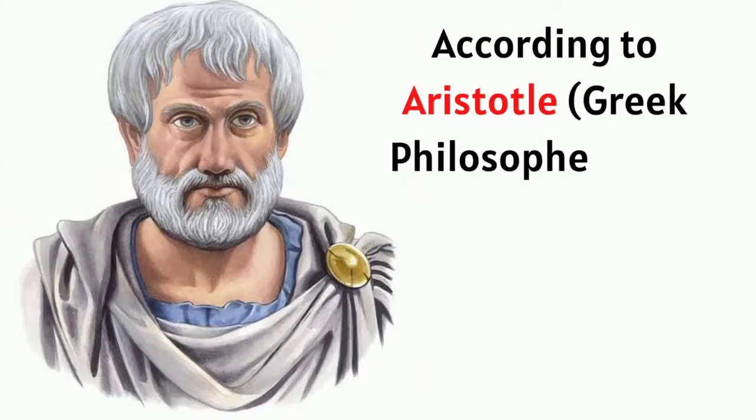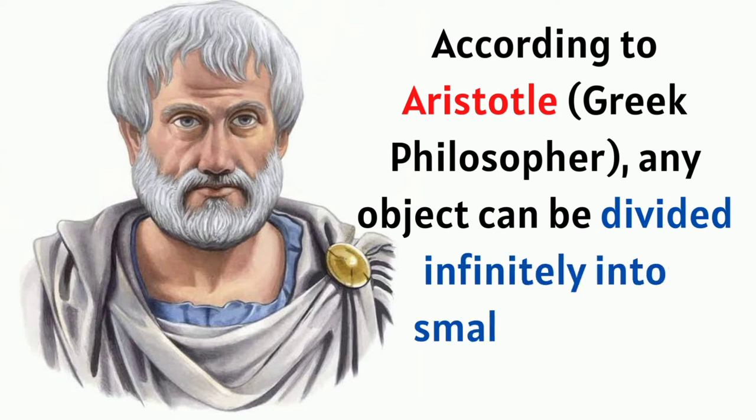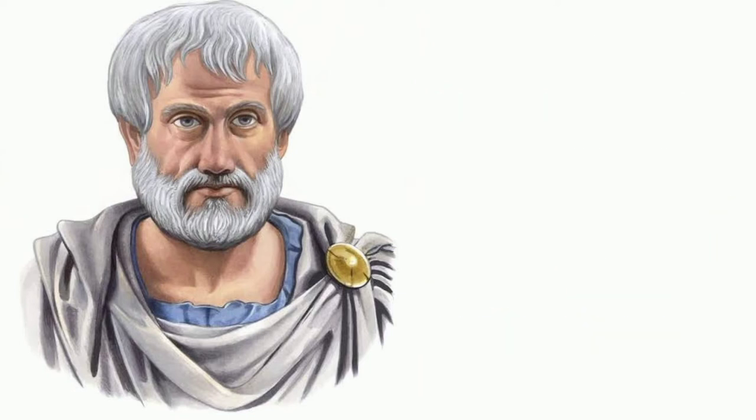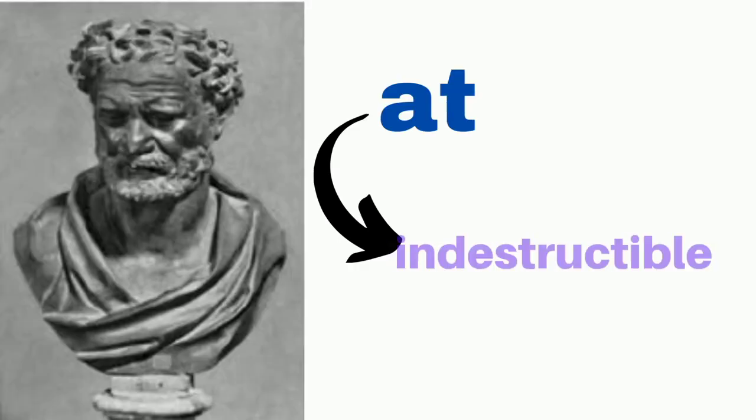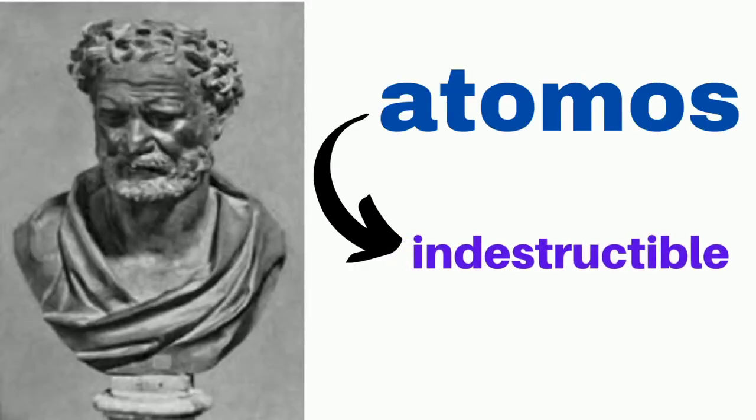According to Aristotle, the Greek philosopher, any object can be divided infinitely into smaller pieces. But Democritus believed that if an object is cut into smaller and further smaller pieces, one may finally attain the smallest indivisible particle which he referred to as atomos, which means indestructible.